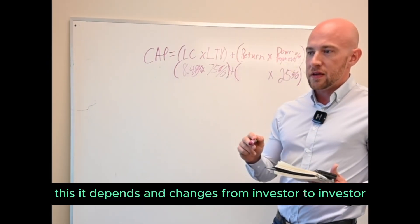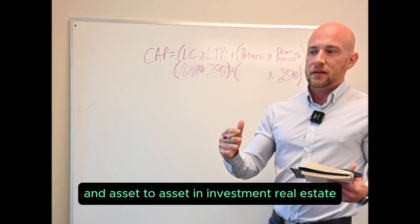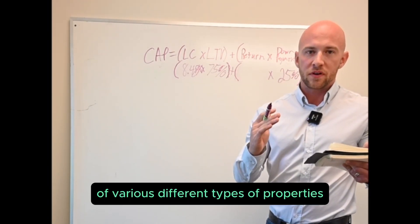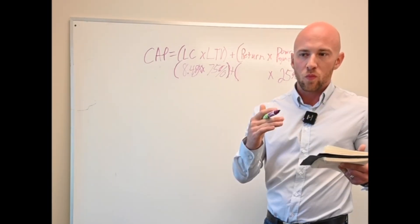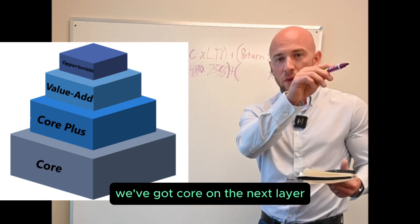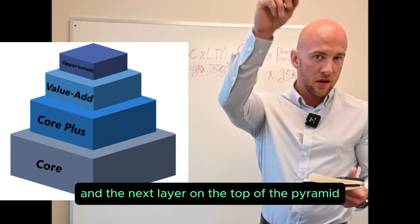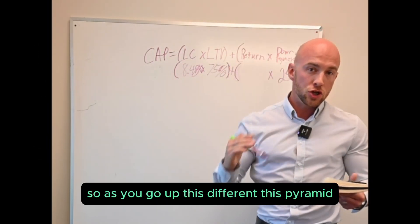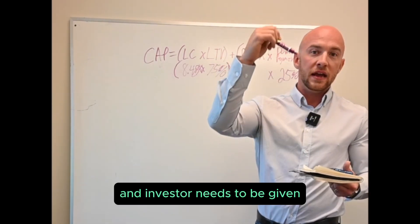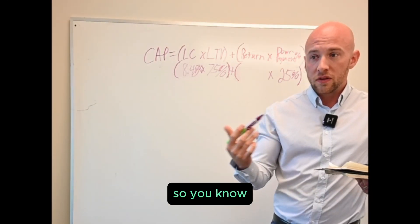Times, now let's talk about the harder part, the return. It depends and changes from investor to investor and asset to asset. In investment real estate we have a pyramid of various different types of properties where we try to describe what type of investment property this is. At the bottom of the pyramid we've got core, on the next layer we've got core plus, on the next layer we've got value add, and the next layer on the top of the pyramid we got opportunistic. So as you go up this pyramid, the higher and higher returns an investor needs to be given based upon the risk that they're taking.